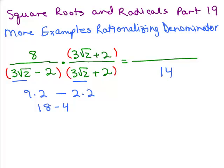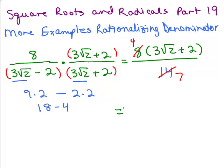The reason I do the denominator first is because instead of doing the distributive property with this 8, I'm going to leave it factored because I can see I can cancel that 14 with that 8. If this was a 3, I'd go ahead and do the distributive property because it wouldn't cancel anyway. So I'm going to leave the 8 times 3 square roots of 2 plus 2, and cancel the 8 with the 14 — 2 goes into both, giving 4 and 7. So the final answer: 4 times 3 square roots of 2 plus 4 times 2 is 8, giving 12 square roots of 2 plus 8 over 7.